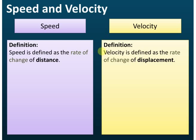Velocity is defined as the rate of change of displacement. Rate of change of displacement means how fast the displacement changes. So speed is a measure of how fast distance changes, and velocity is the measure of how fast displacement changes.